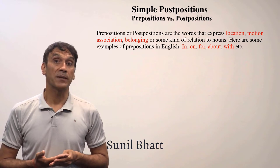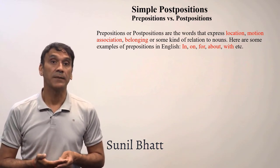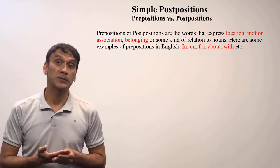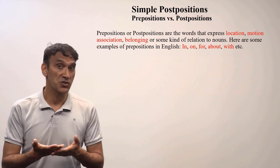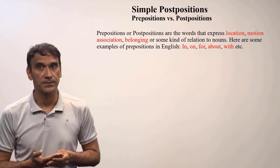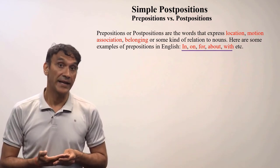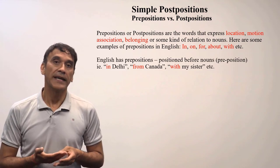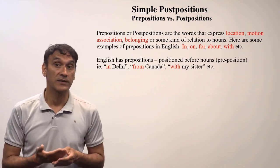The next grammar point is simple postpositions. Postpositions in Hindi are something like prepositions in English. Prepositions or postpositions are words that express location, motion, association, belonging, or some kind of relation to nouns. Here are some examples of prepositions in English: in, on, for, about, etc.